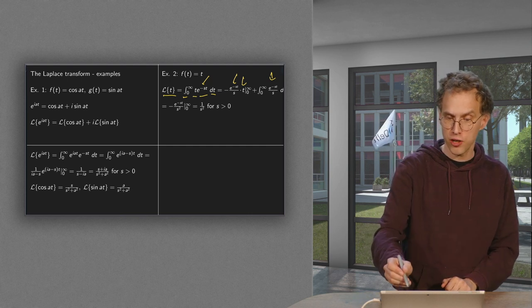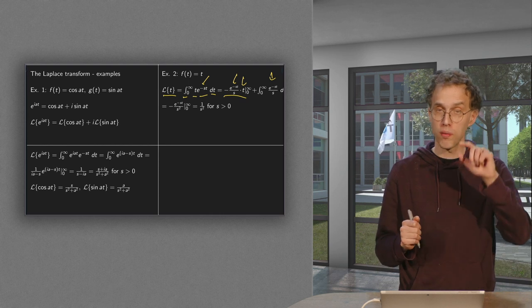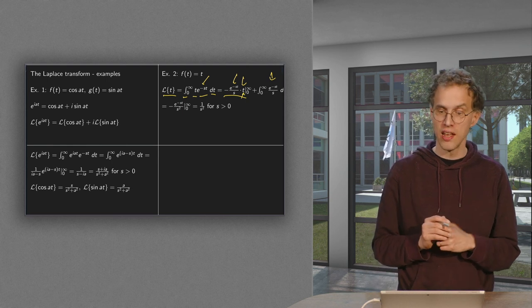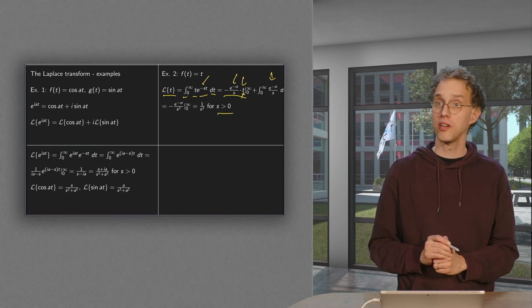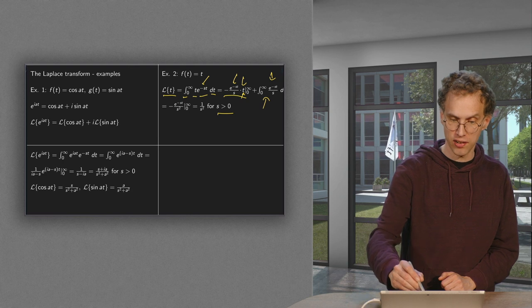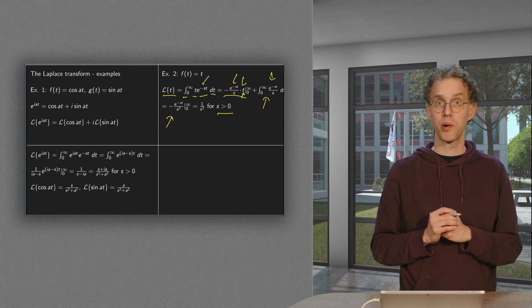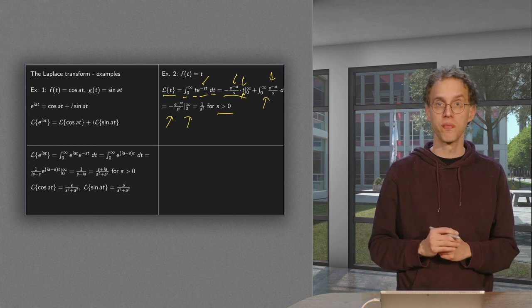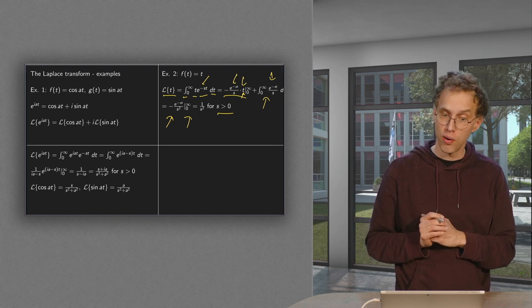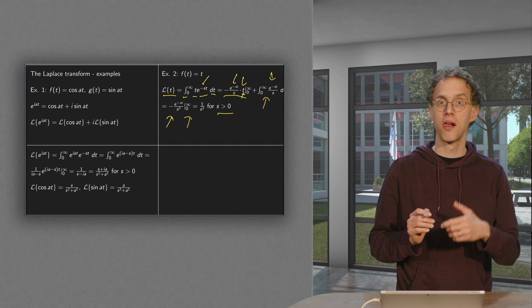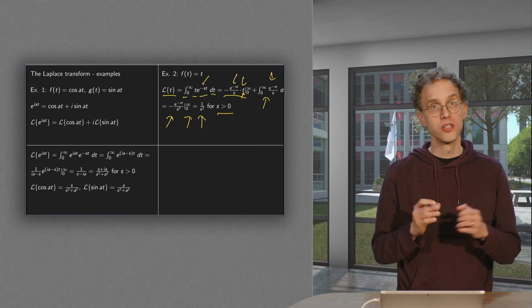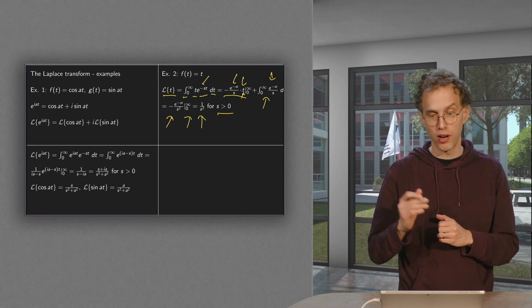The first term disappears: at the lower boundary t = 0 gives zero, and if we pick s positive then the upper boundary also vanishes. That means we are only left with the remaining integral. Integrating again gives minus 1 over s² times e^(−st), evaluated between 0 and infinity. The upper boundary vanishes since s is positive, and the lower boundary gives minus 1 over s², with the additional minus sign yielding 1 over s². So the Laplace transform of t equals 1/s².